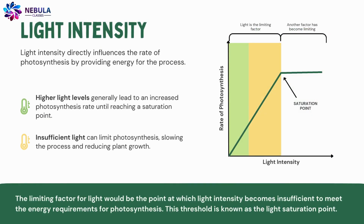Light intensity directly influences the rate of photosynthesis by providing energy for the process. The limiting factor for light would be the point at which light intensity becomes insufficient to meet the energy requirements for photosynthesis. This threshold is known as the light saturation point.